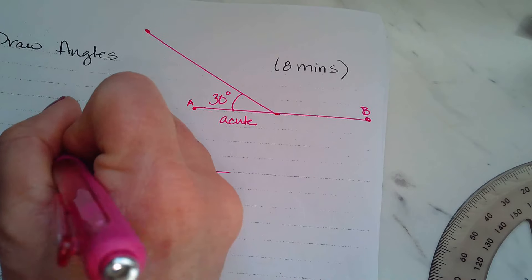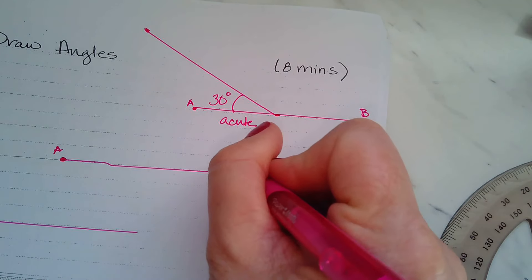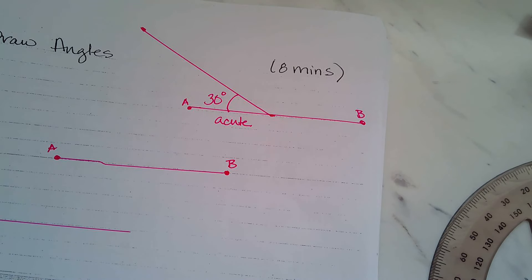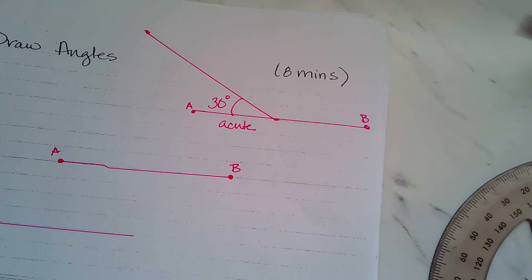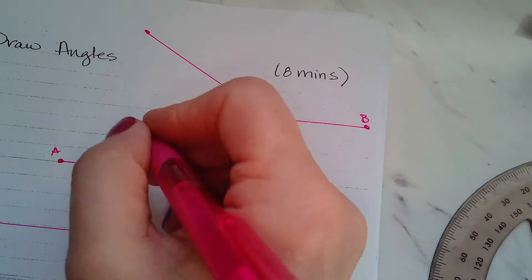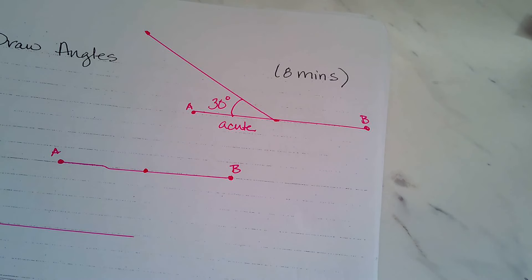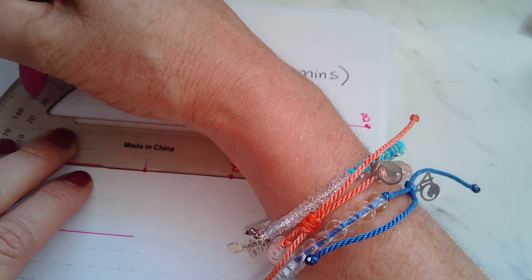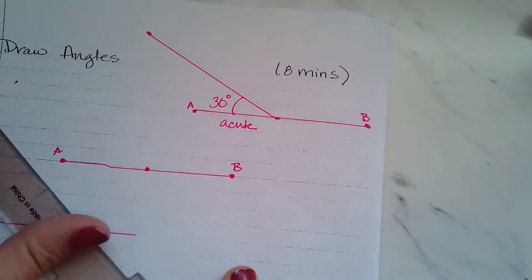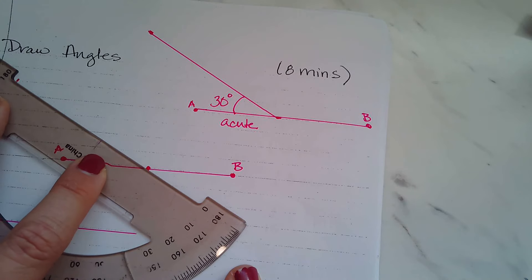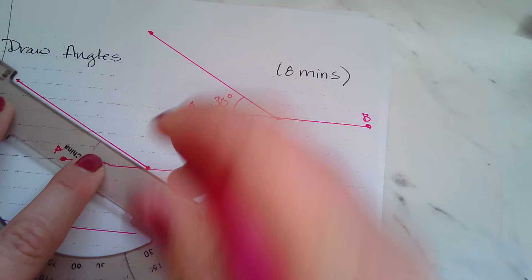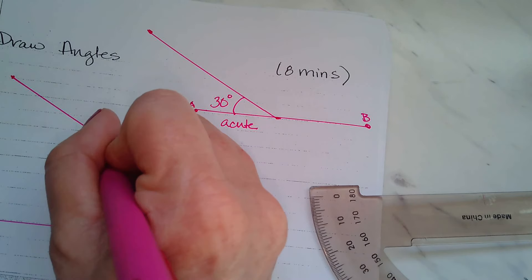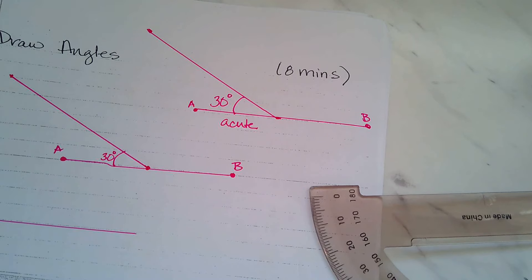On our next line, we're going to label it A, B. And now we are going to draw another 30-degree angle. Let's start in the middle. And we're going to go in the same direction again. We're going to go to the left. So here's a new 30-degree angle.